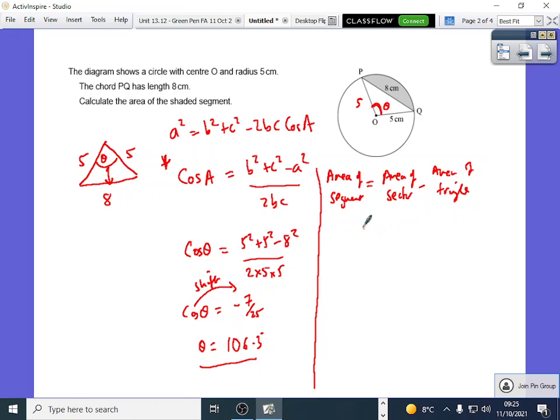So I'm literally just going to put the numbers in now. Area of sector, that's the degrees, so that's going to give me 106.3 over 360, times pi r squared. Pi, and r is 5, that's 5 squared. So that's pi r squared, it's a full circle, but I want that fraction which is 106 over 360.